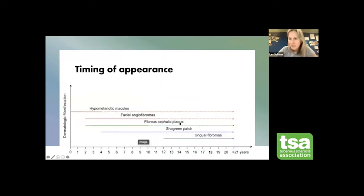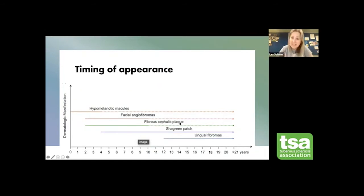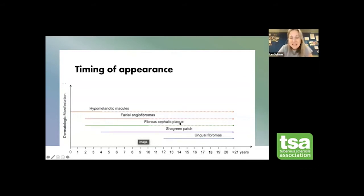In tuberous sclerosis, everything is on the spectrum, and skin is included. You can have very mild skin changes or very severe ones; you can have only a few, or you can have all of them, or almost none. Usually something is present though. The timing of when the different features appear is shown on this slide — it starts with hypomelanotic macules, then facial angiofibromas, then fibrocephalic plaques, shagreen patches, and ungual fibromas.